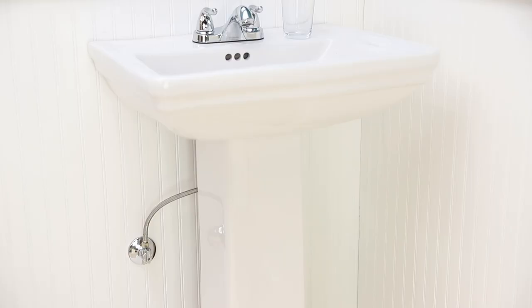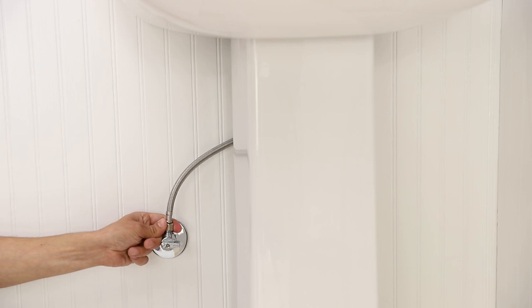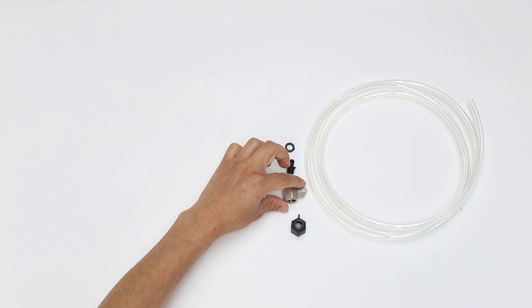If you would like to supply your bidet attachment with warm water, please follow these steps. Locate the hot water supply line in your bathroom under your sink. Turn the water supply valve all the way off and turn on the hot faucet to drain any residual water. Disconnect the hot water supply hose that runs to the faucet.